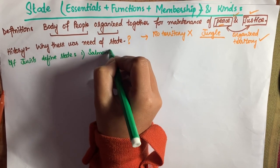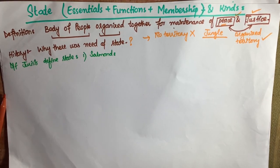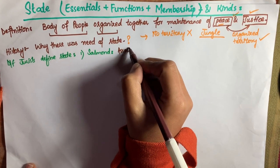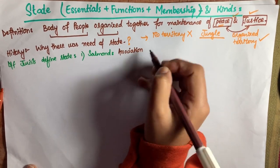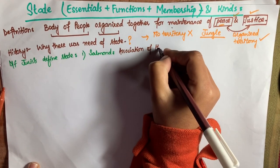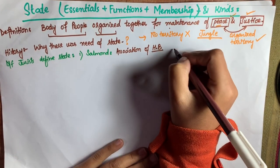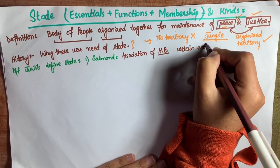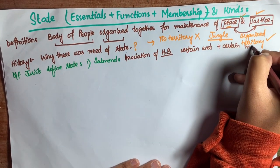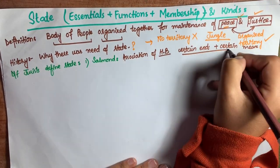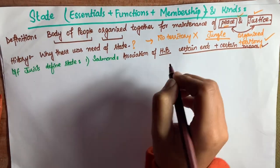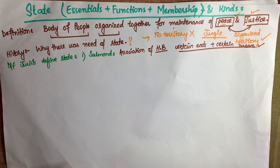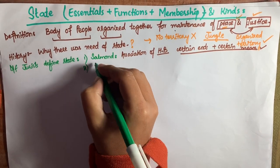Different jurists define state according to their different opinions. First, Sir John Salmond says that state is an association of human beings established for the attainment of certain ends by certain means — meaning, how we achieve peace and how we live peacefully.